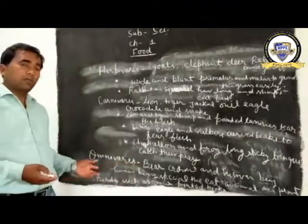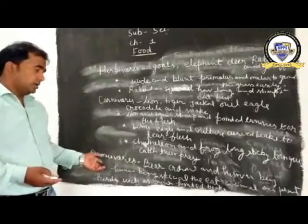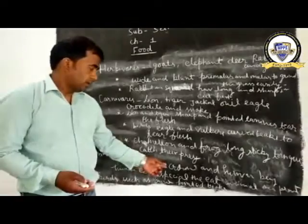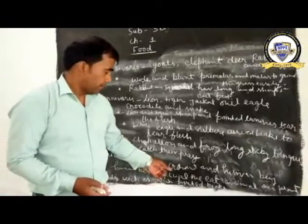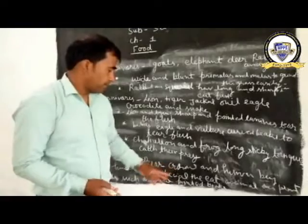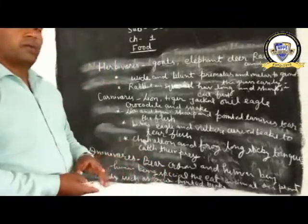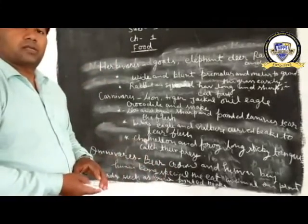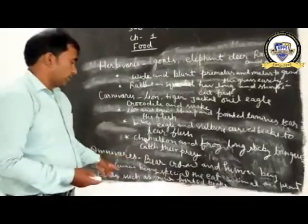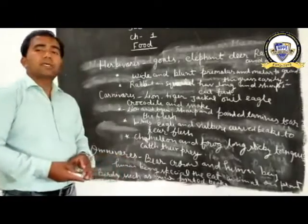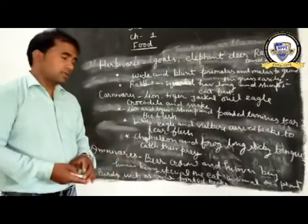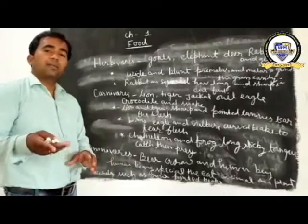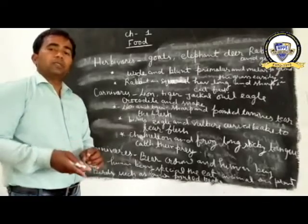Next, omnivorous — there are also different types of omnivorous animals, such as bear, crow, human beings, and chimpanzee. Human beings have special teeth that allow them to eat both flesh and plants easily.